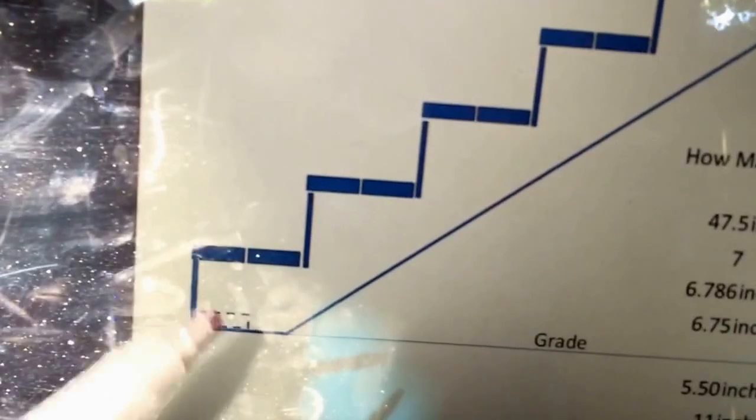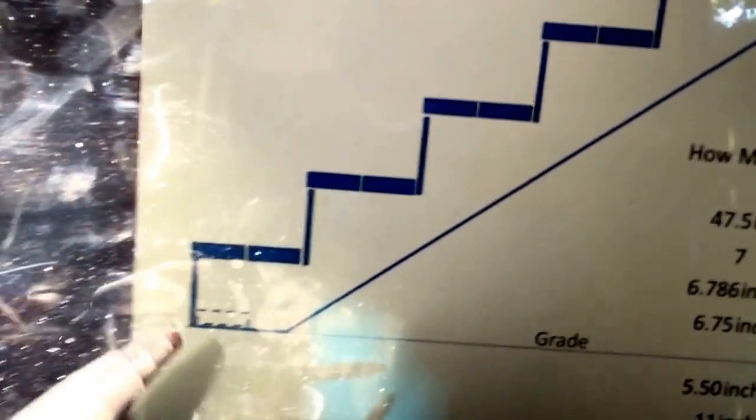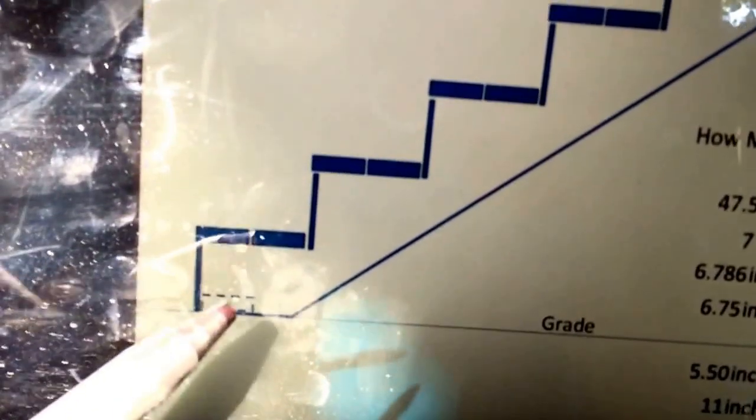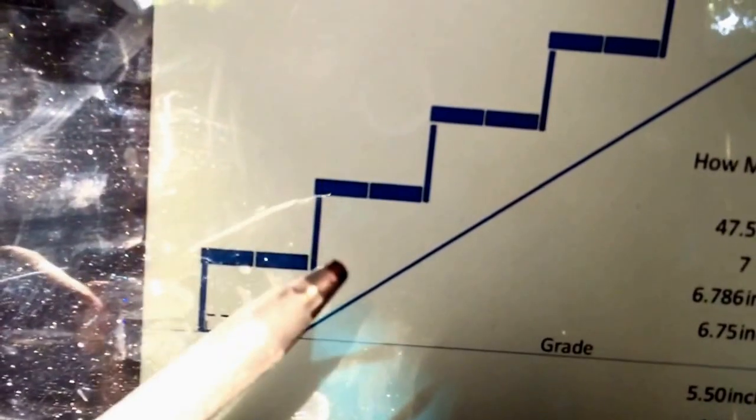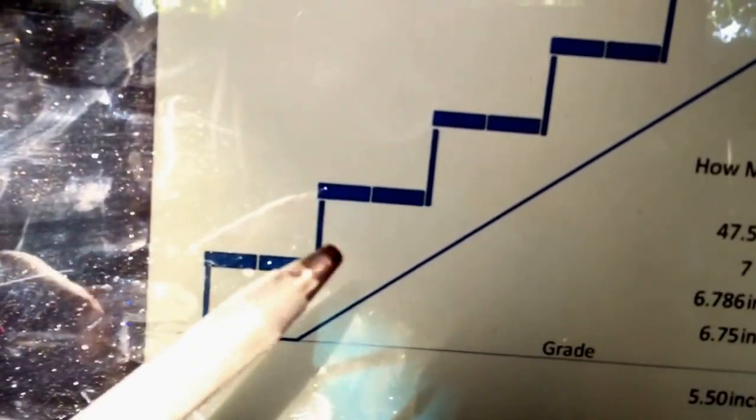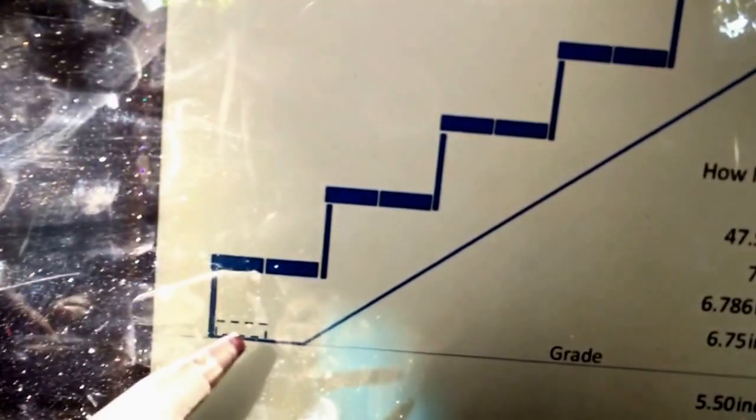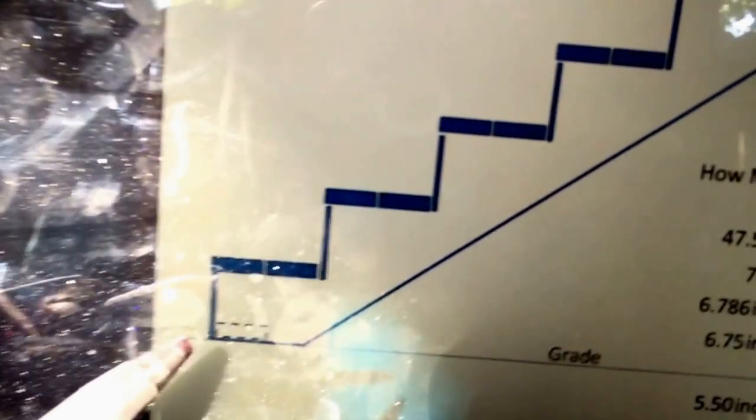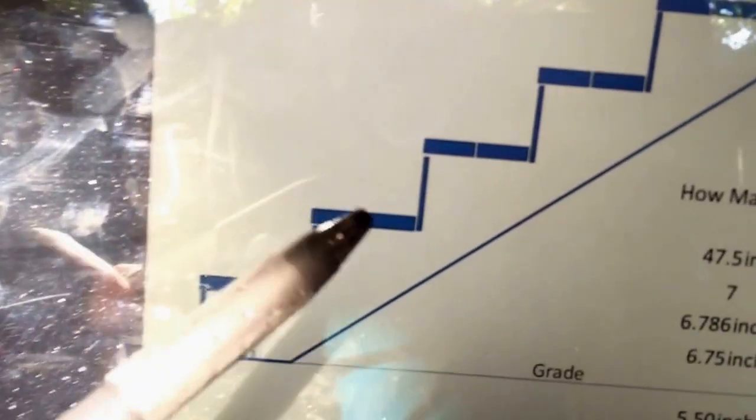So to make this step height the same as this one, because we don't have this inch and a half material sitting on top of this grade, we need to adjust the height of this particular rise. So instead of six and three quarter inches from here to here, we're going to go five and a quarter inches from here to here. And that's going to give us a step height, adding an inch and a half, it's going to give us a step height of six and three quarter inches.